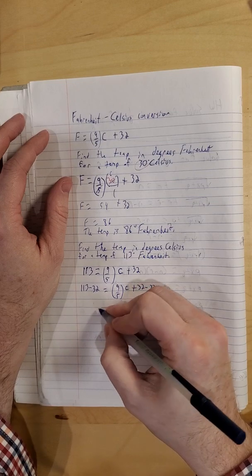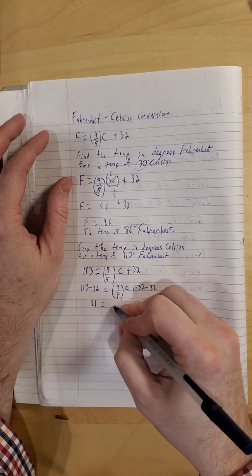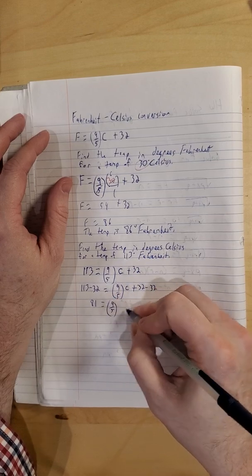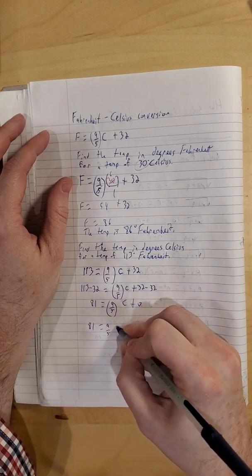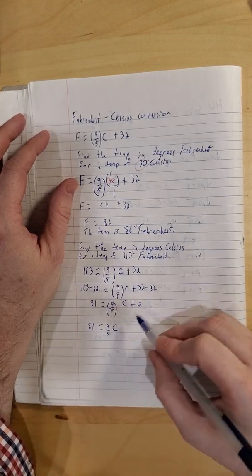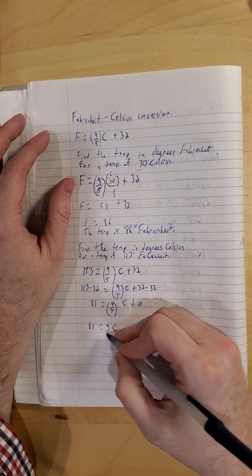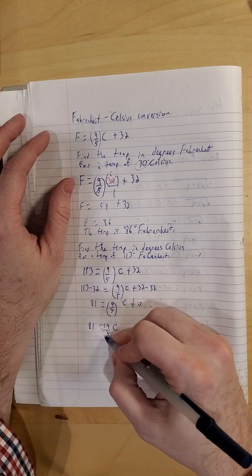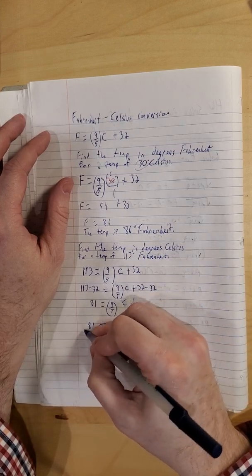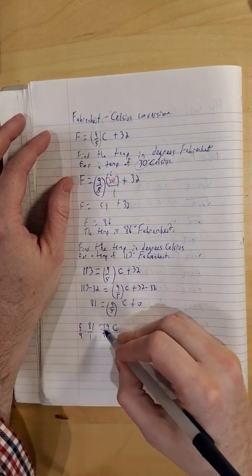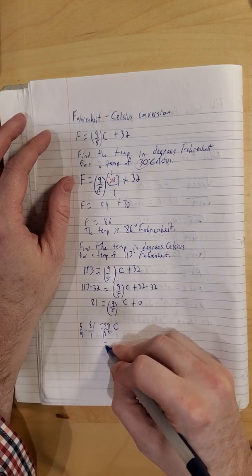So left hand side, just a little bit of arithmetic there. So 81 is nine-fifths times C. So next we use the multiplication property of equality. So I'll multiply both sides by the multiplicative inverse of nine-fifths, which is five-ninths.